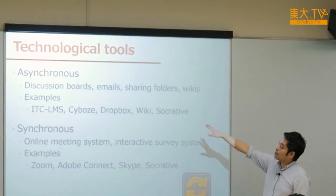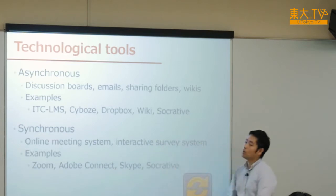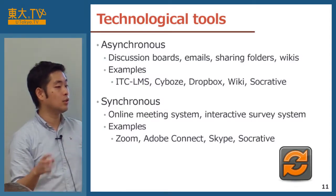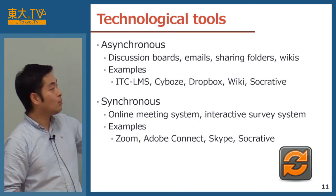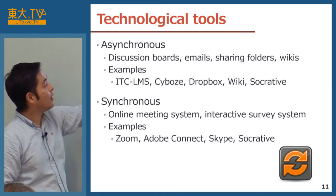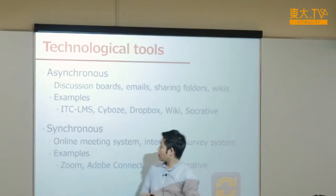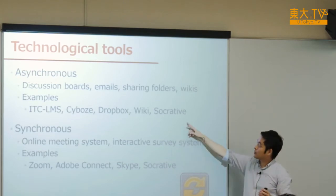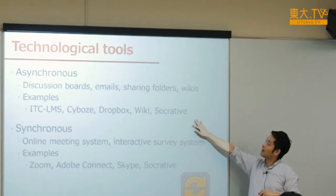The three perspectives are: asynchronous or synchronous, content-based or communication-focused, and hardware or software. The first is asynchronous tools — representatives include discussion boards, emails, sharing folders, and wikis. Asynchronous means students and faculty members do not have to use the technology at the same time — they can use it when they want to. Examples include ITC LMS which Tokyo University provides, CYBO, Dropbox, wiki, and Socrative in student-paced mode.